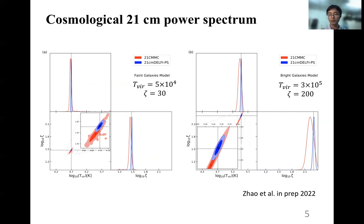Note that in 21CMMC, the likelihood function is assumed to be a multivariate Gaussian function with independent measurements at each redshift and each k-mode. Our results question the validity of this explicit likelihood assumption.